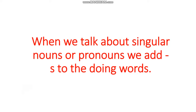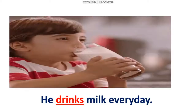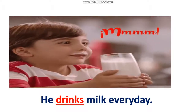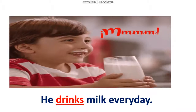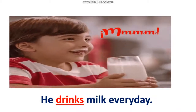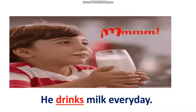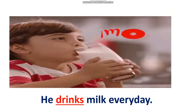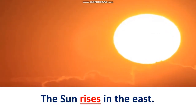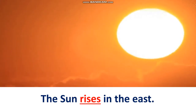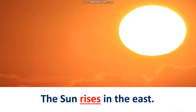Now let's study how to use action words following the rules. When we talk about singular nouns or pronouns, we add S to the action words or verbs. For example, 'He drinks milk every morning.' Here, drink is a verb and we are talking about one person, so S will be added to drink and it will become drinks. Another example: 'The sun rises in the east.' The sun is a singular noun, so S will be added to rise, which is a verb here, and it will become rises.